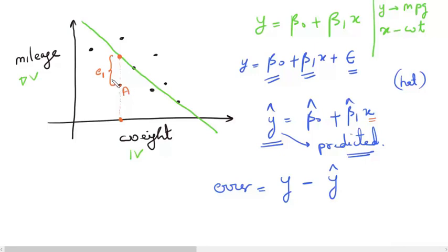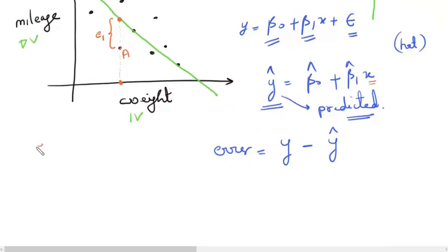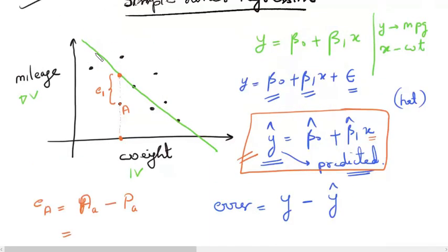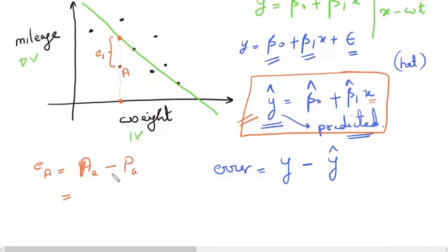For point A, the error is the actual value of point A minus the predicted value of point A. We can see the actual value of point A is lower, while the predicted value lies on the line — and predicted values will always lie on the line since they come from the equation of the straight line. So for point A the error is negative.